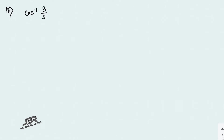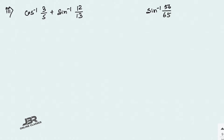Number 3: cos⁻¹(3/5) + sin⁻¹(12/13) = sin⁻¹(56/65). We know the formula for sin⁻¹(x) + sin⁻¹(y) and for cos⁻¹(x) + cos⁻¹(y), but there is no mixed formula. Since the answer must be in sin⁻¹, if we can convert cos⁻¹ to sin⁻¹, we can apply the sin⁻¹(x) + sin⁻¹(y) formula.